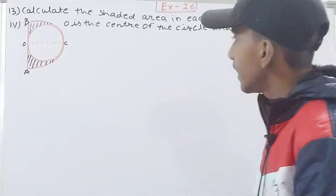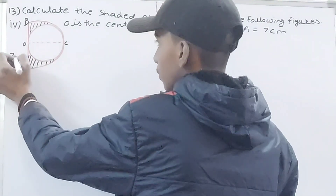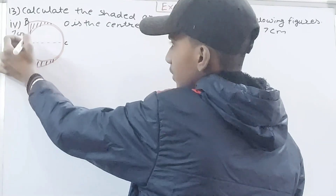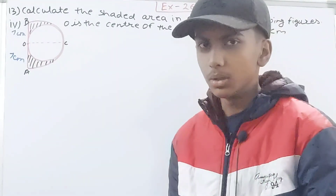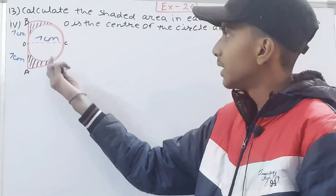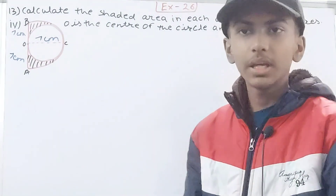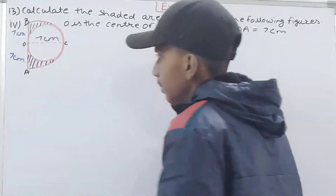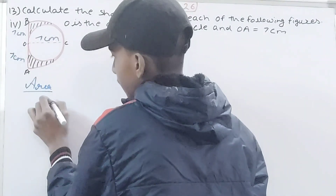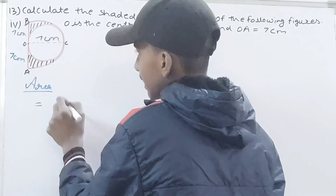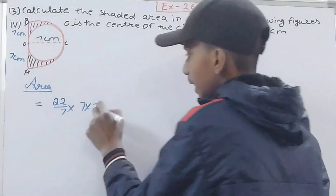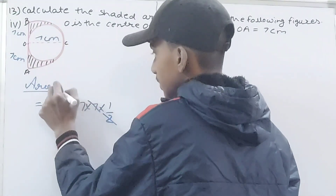Let's move to part four. Here we have a big semicircle, and OA is given as 7 centimeters where O is the center of the circle. Since O is the center, any point on the boundary is also 7 centimeters away, meaning the radius is 7. Inside the big semicircle there is one smaller circle. We calculate the area of the big semicircle: π r² / 2 = (22/7) × 7 × 7 × (1/2) = 11 × 7 = 77.